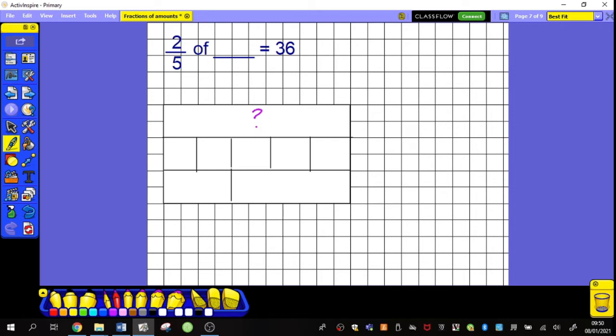The difference here is now it's two parts are equaling thirty-six. In my bar model, I have my two parts here. First of all, I split my second row into the five because that's what my denominator is. And then in the third row, I've then grouped two of them together. Two of those parts now equal thirty-six.